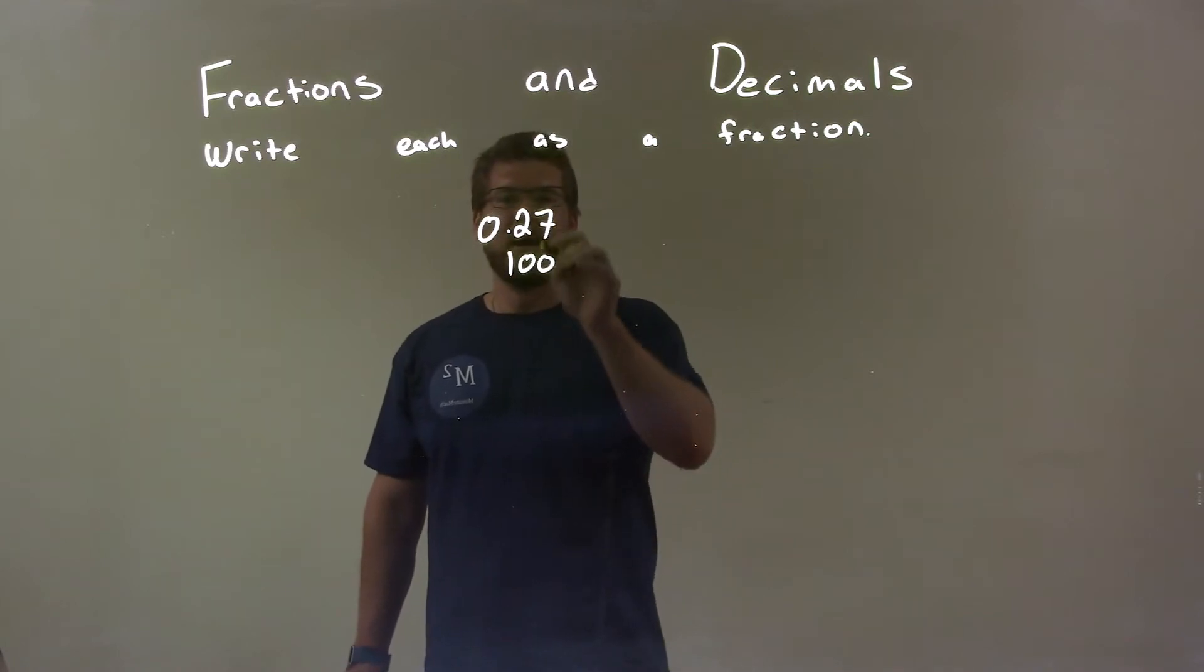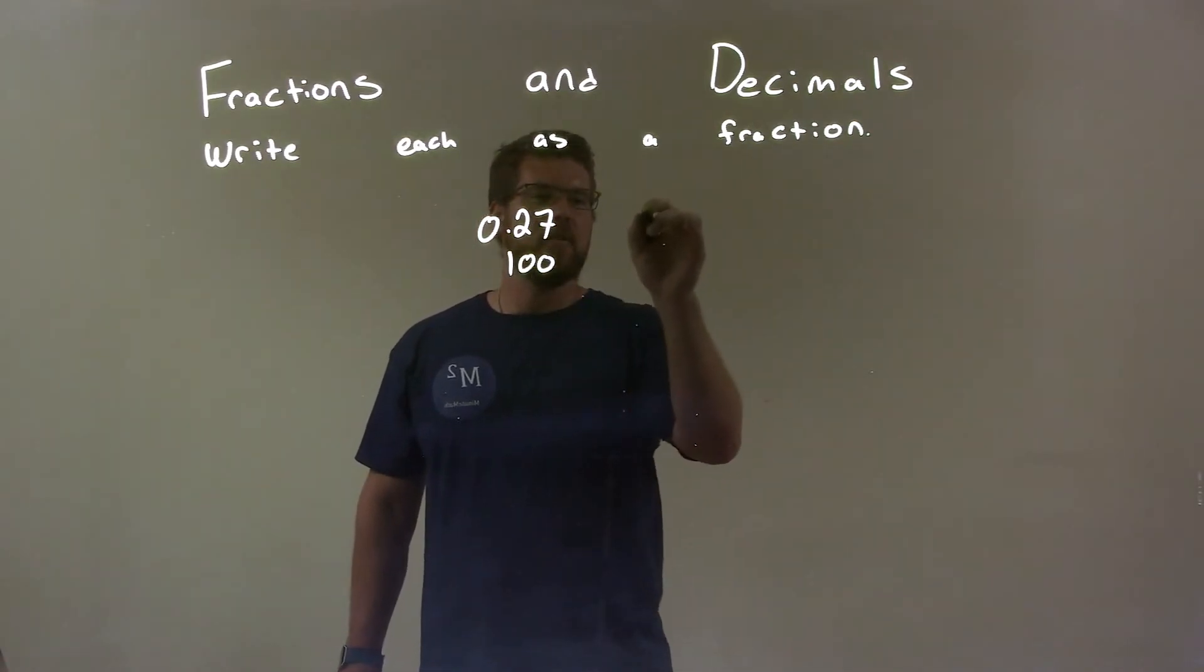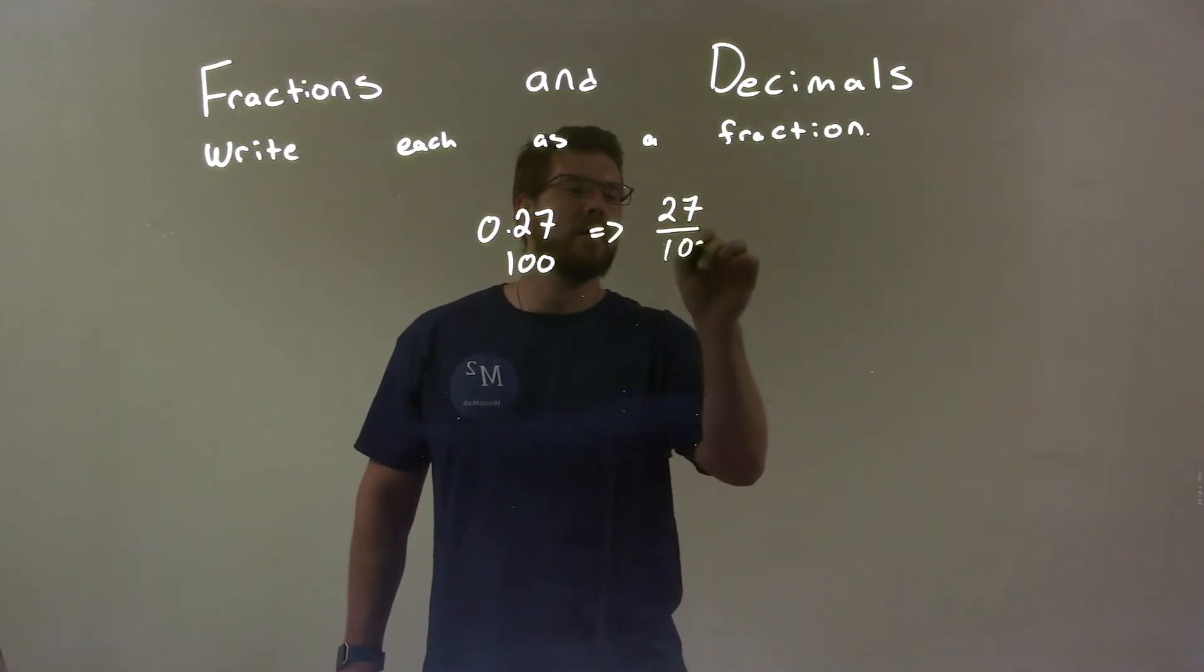Well, right there I have 0.27 and then 100, right? So that's the same thing as saying 27 over 100.